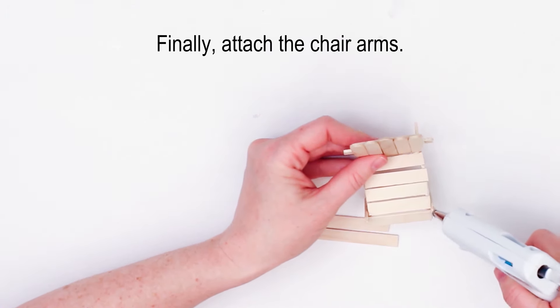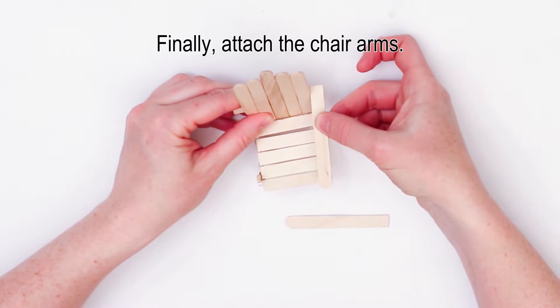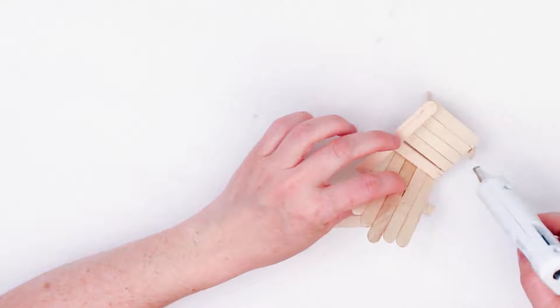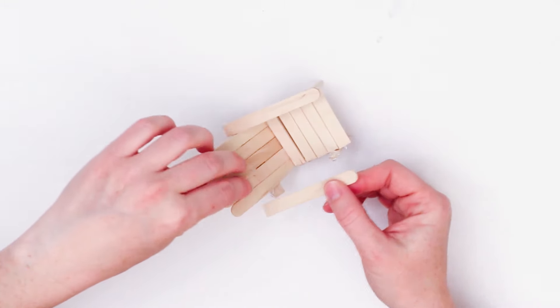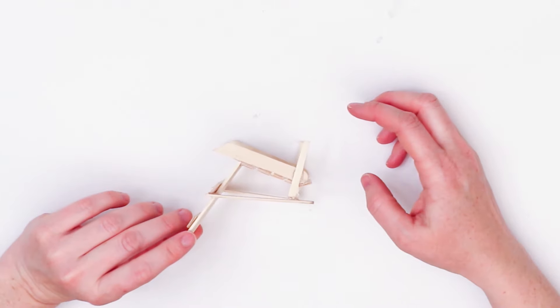And finally we're going to add on the chair arms as shown and this really helps to stabilize the entire chair and hold it together. Again look at it and make sure it's as centered as can be and looks all balanced.